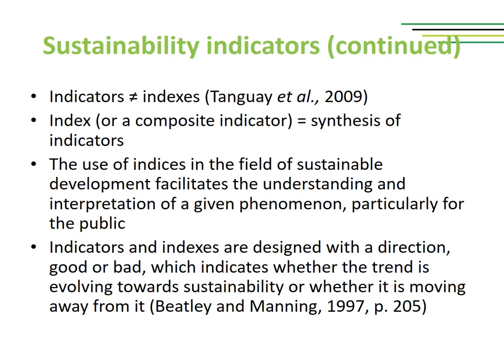Another important distinction is the one between indicators and indexes. An index or composite indicator is a synthesis of multiple indicators. The use of indices in the field of sustainable development facilitates the understanding and interpretation of a given phenomenon, particularly for the public, who can much more easily understand a single number which allows for benchmarking exercises. Indicators and indexes have to be designed with a direction — good or bad — which indicates whether the trend is evolving towards sustainability or moving away from it, allowing even the public to quickly understand how an organization or community is performing over a given interval of time.